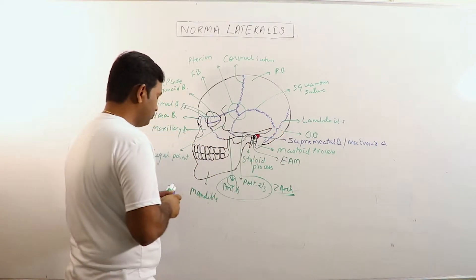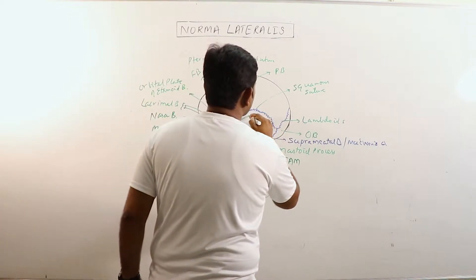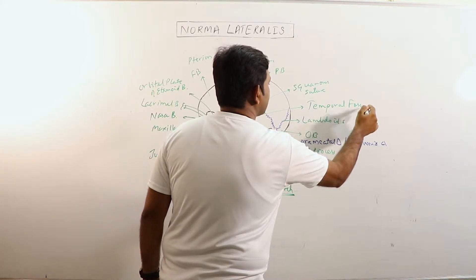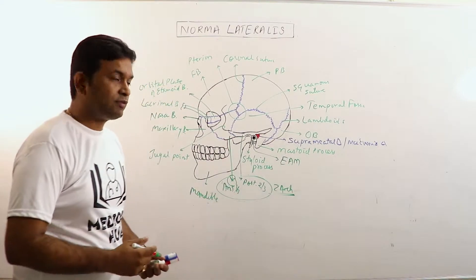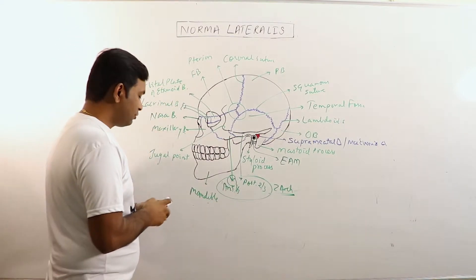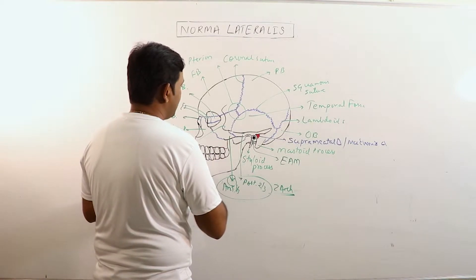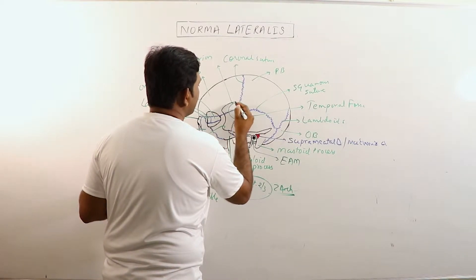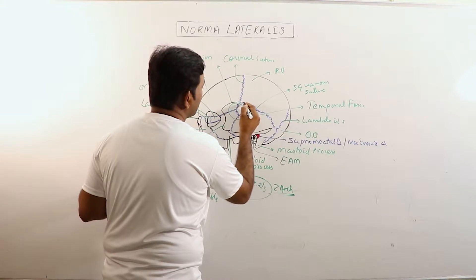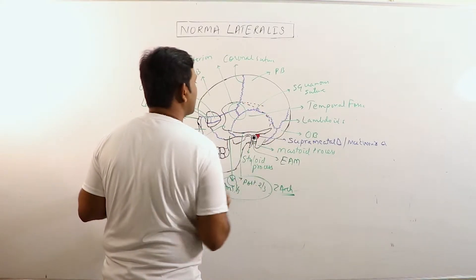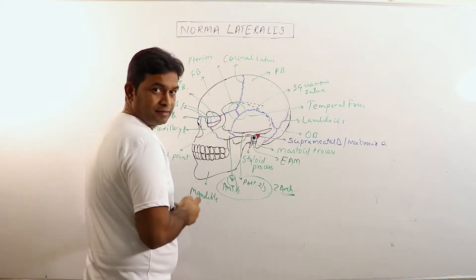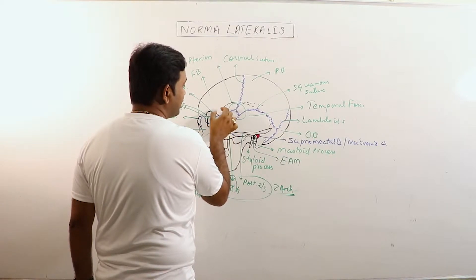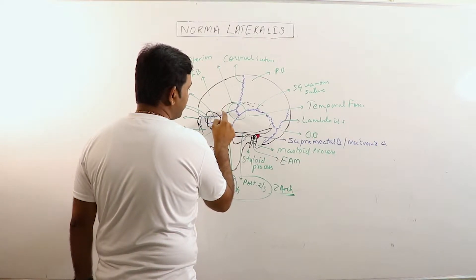This region is known as the temporal fossa. This whole region is known as the temporal fossa. Now what are the boundaries of the temporal fossa? The temporal fossa is lined superiorly by the temporal lines. The temporal line originates from the frontal bone, from the zygomatic process of the frontal bone, and arches upwards and backwards, then crosses the coronal suture and divides into superior and inferior temporal lines.